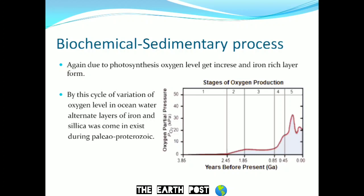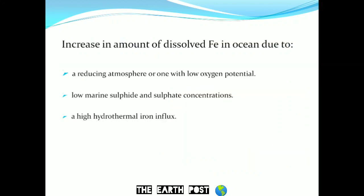This diagram shows the partial pressure of oxygen, or the stages of oxygen production, with respect to time. A huge amount of iron was present in the ocean; the factors that increased the amount of dissolved iron in the ocean are: first, a reducing atmosphere with low oxygen potential; second, low marine sulfide and sulfate concentration; and third, a high hydrothermal iron influx from the hydrothermal vents found on the ocean floor.